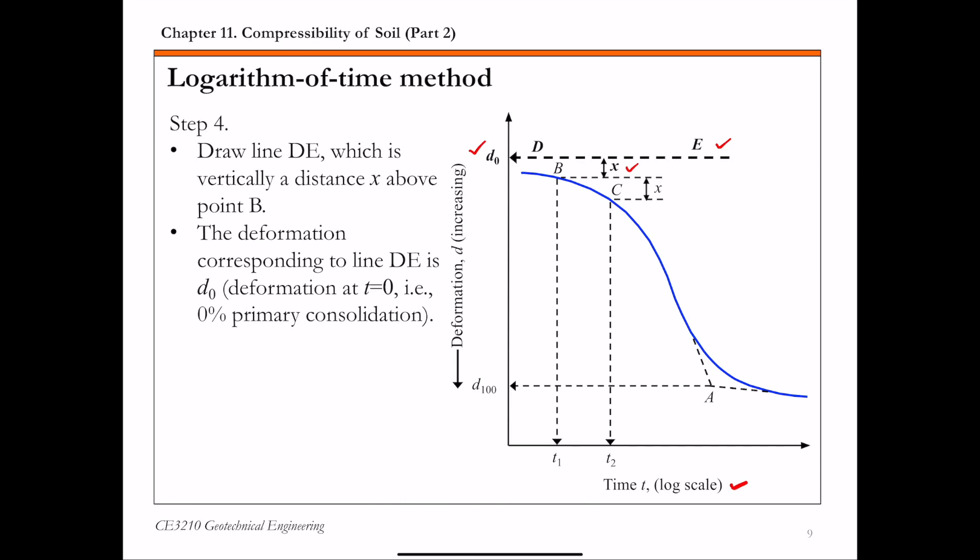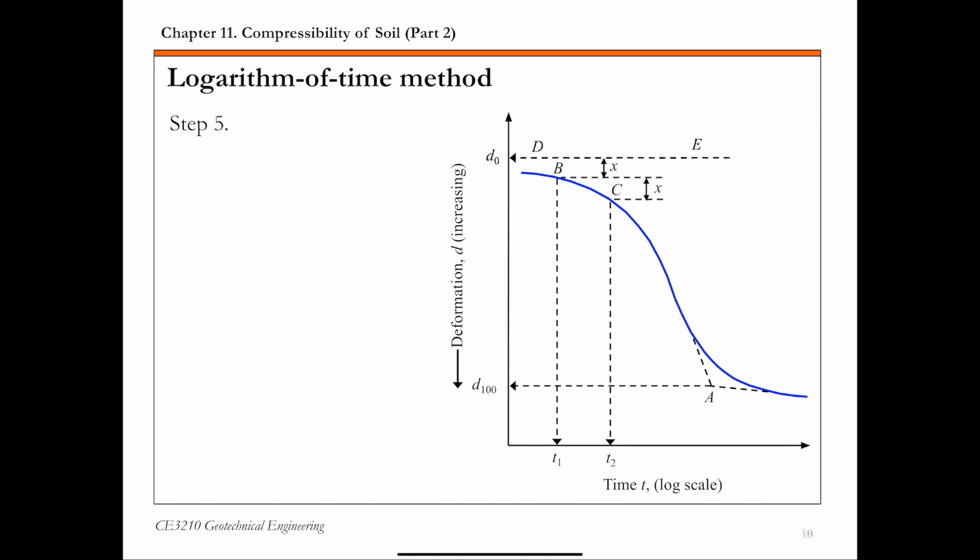Once you identify this d0, step five is to determine d50. d50 is simply half of the sum of d0 plus d100. That's your d50 value.